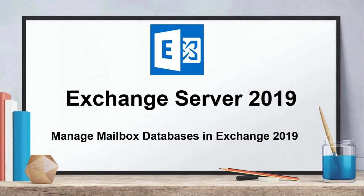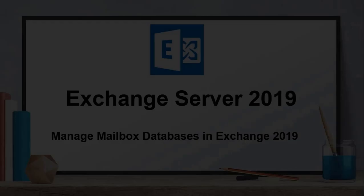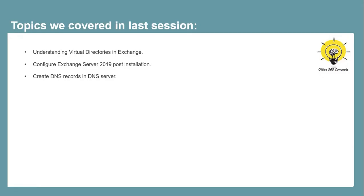Hi guys, I hope you all are doing well and welcome to the next video of this entire series of Exchange Server 2019. In the last video, we talked about virtual directories in Exchange 2019. We discussed how to configure internal and external URLs for virtual directories, and how to create DNS records in local DNS so that users can use Exchange services from domain joined machines.